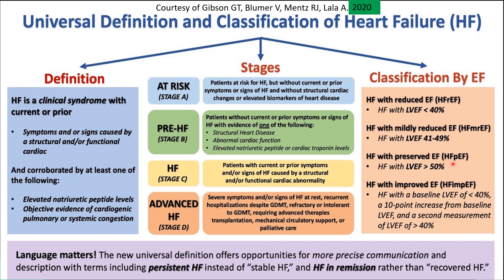The first group is heart failure with preserved EF — HFpEF — where the criteria is EF over 50%. Between 40–50% goes to the second category: heart failure with mildly reduced ejection fraction (HFmrEF). Most of these patients are asymptomatic. The third group is heart failure with significantly reduced ejection fraction below 40% — HFrEF. Finally, the fourth group they added is heart failure with improved EF.